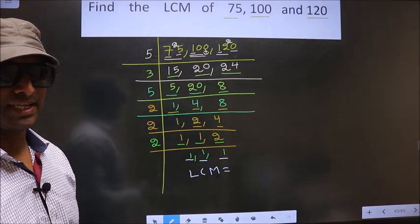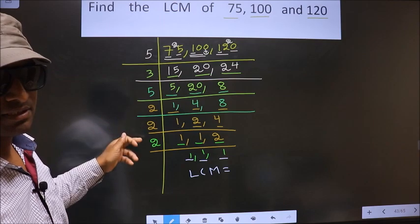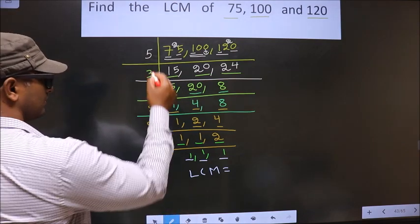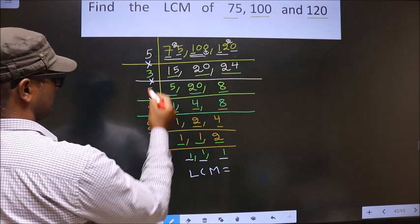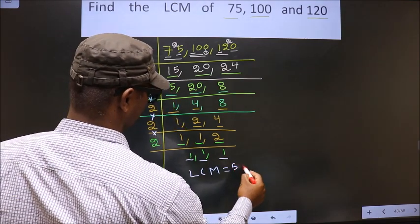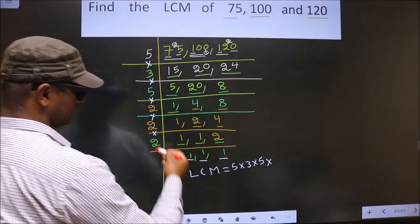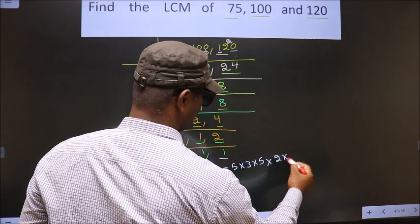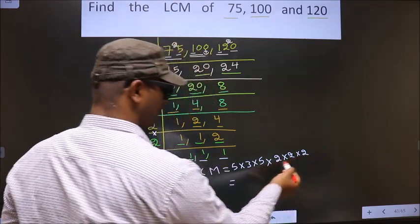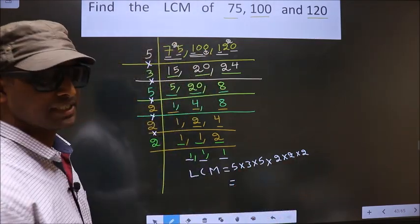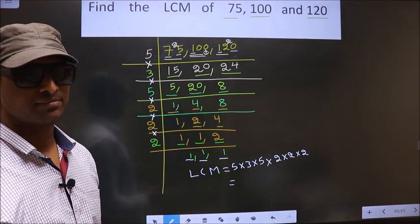The LCM is the product of these numbers: 5 into 3 into 5 into 2 into 2 into 2. Multiply all these numbers — whatever number you get, that is your LCM.